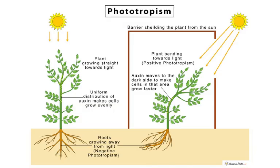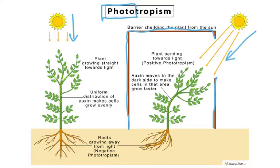Now let's look at phototropism. Phototropism is very simple — photo means light. If the light is coming from the top, then of course the plants grow straight towards light. Uniform distribution of auxin makes the cells grow evenly. But if you cover it in a dark box and have light coming from only one side, you find that the plant bends. The further growth is going to be towards light — that's called positive phototropism.